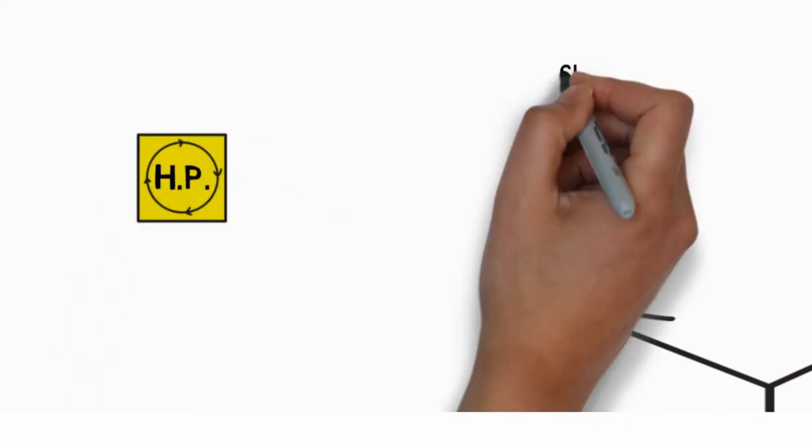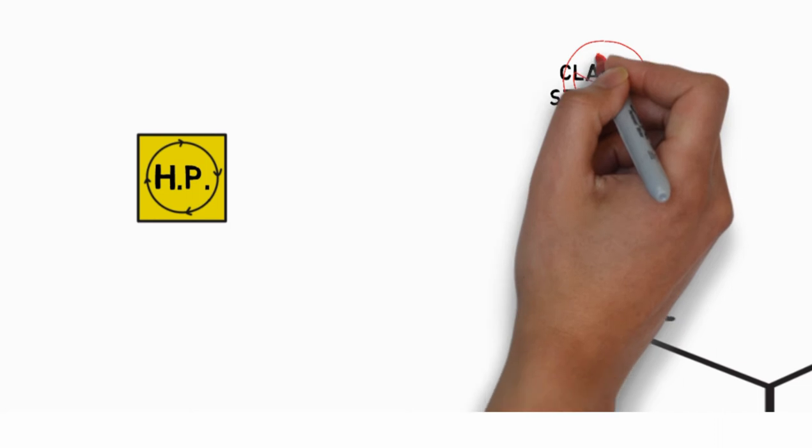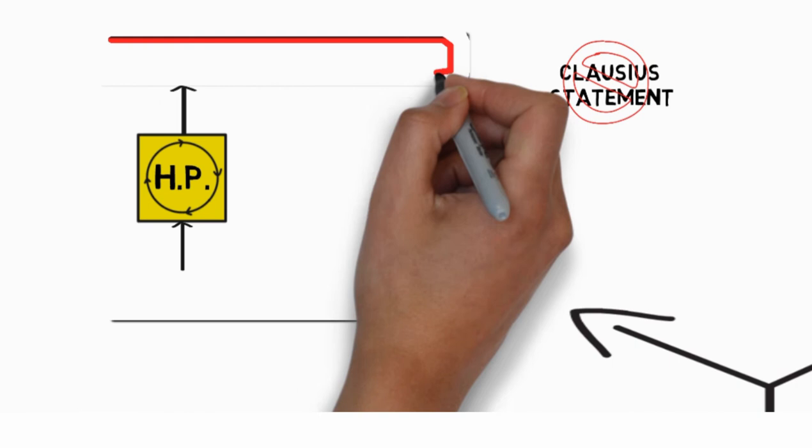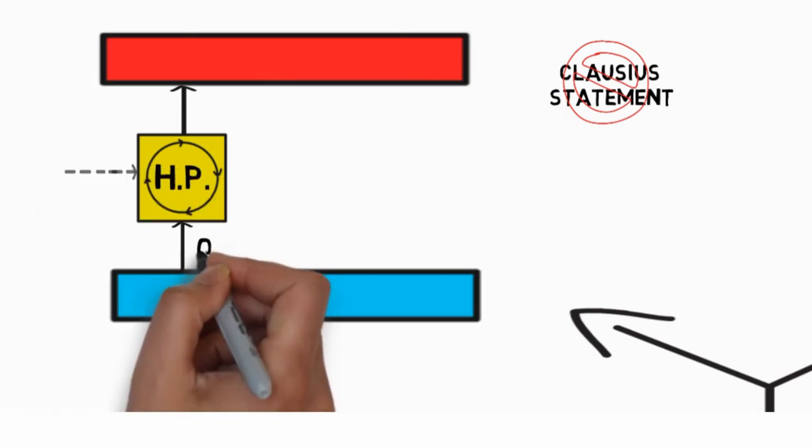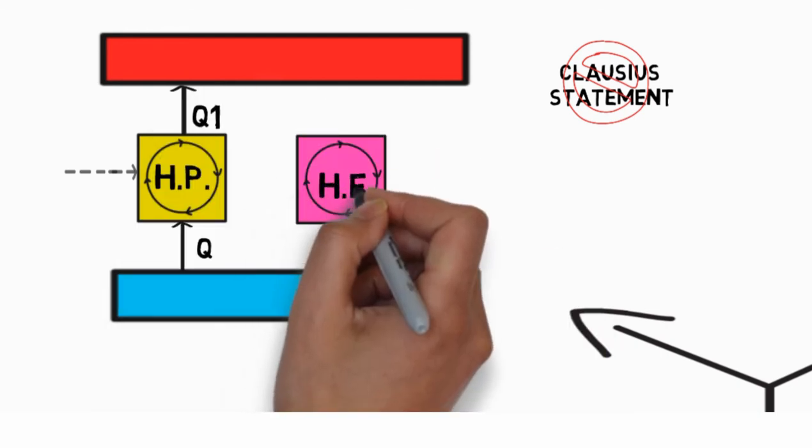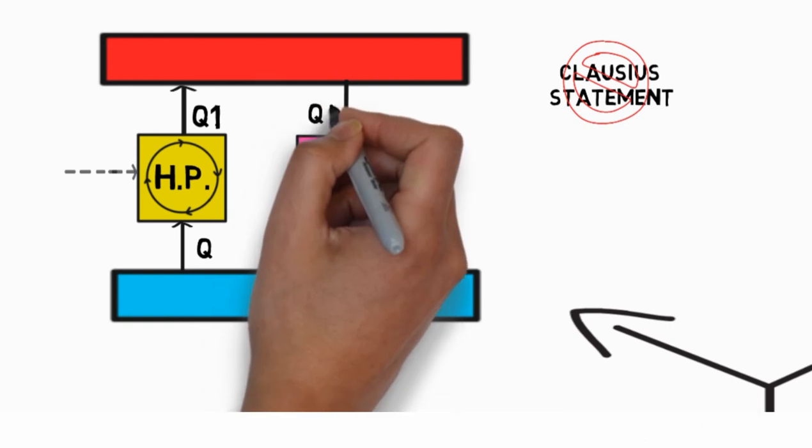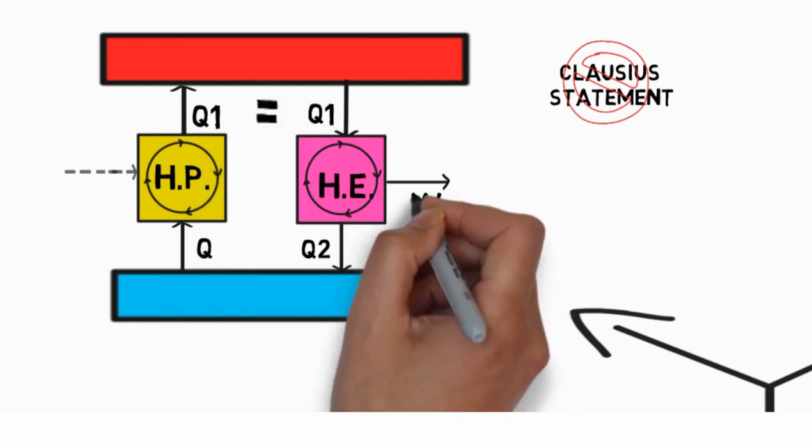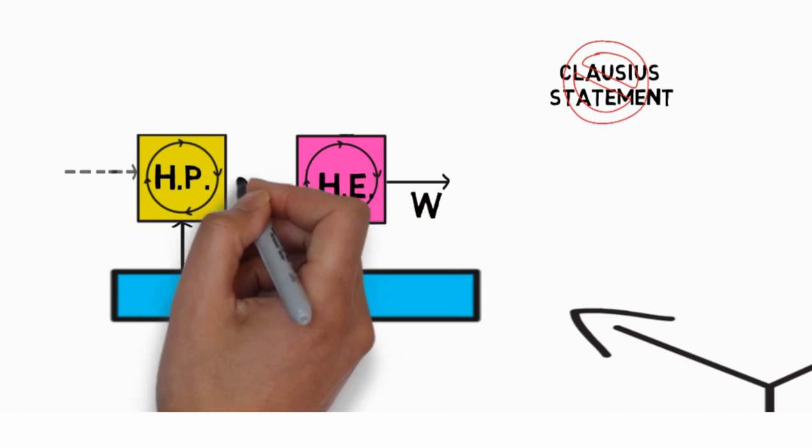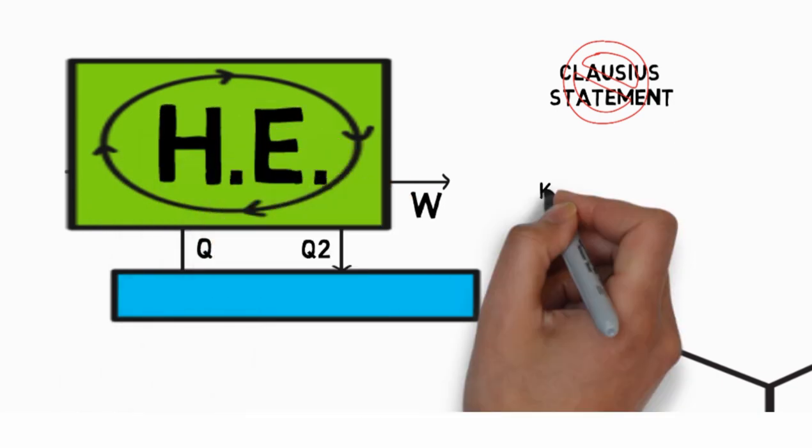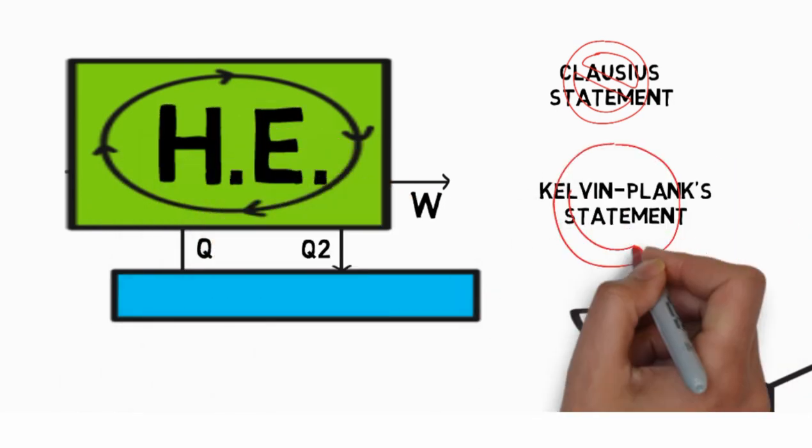First, consider a heat pump which violates the Clausius statement. That is, it simply transfers heat from one reservoir to another without any work expenditure. Assume a cyclic heat engine operating between the energy reservoirs such that it draws the same amount of heat, Q1, equal to that discharged by the pump. If we eliminate the hot reservoir and directly pump the heat into the heat engine, then we get a combined heat engine operating in cycles and producing network while exchanging heat only with one body at a single fixed temperature, thus violating the Kelvin-Planck statement.